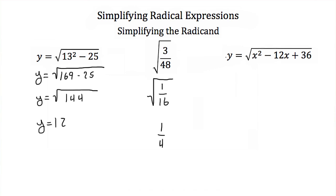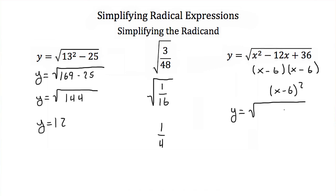Now this works for variables too. Here we have y is equal to the square root of x squared minus 12x plus 36. Let's look at this quadratic underneath our square root sign — I can factor it into x minus 6 times x minus 6, or think of that as x minus 6 squared. So if I'm taking the square root of x minus 6 squared, the square root of a square gives you just the absolute value. So our solution would be the absolute value of x minus 6.